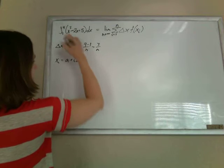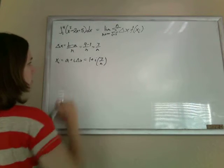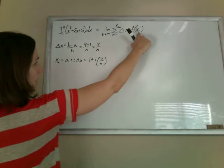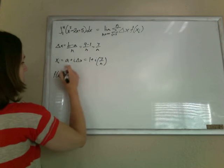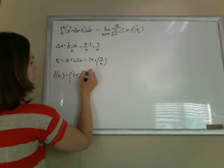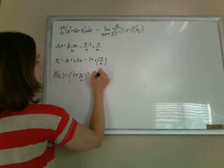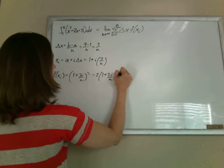And then, so my a is 1, i is i, delta x we figured out was 3 over n. Now I'm going to find f of x of i by plugging in my x of i to my function. So I need x of i squared minus 2 times x of i plus 5.